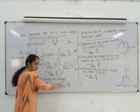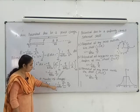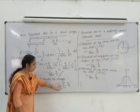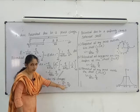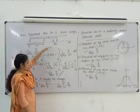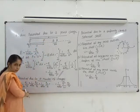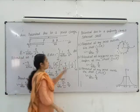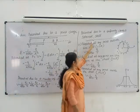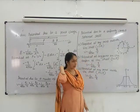Using sigma notation, V is equal to 1 by 4 pi epsilon 0 into sigma from i equal to 1 to n of Qi by Ri.